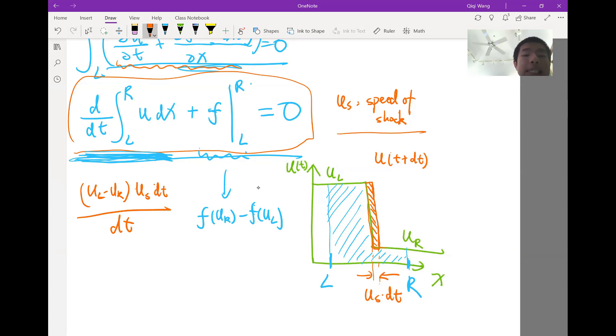So what this equation, what the integral form says is that the first term plus the second term has to be equal to 0. That actually tells us what us has to be. The dt cancels, and us, if you divide...